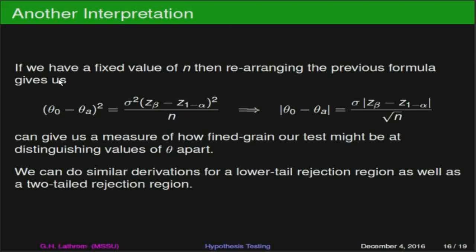Another interpretation of the expression we just derived — probably more applicable for a fixed value of n — is to rearrange that formula to find that the absolute value of theta-sub-naught minus theta-sub-a equals sigma times the absolute value of z-sub-beta minus z-sub-one-minus-alpha over root n. This can be interpreted as a measure of how fine-grained our test actually is — how big a separation can we actually determine with our sample size, for a test with a particular desired power.